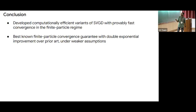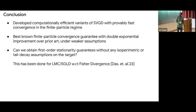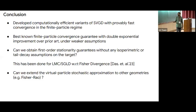To conclude: we developed a computationally efficient variant of SVGD with provably fast convergence in the finite particle regime. This is the best-known finite particle convergence, with a double-exponential improvement over prior state of the art, under much weaker assumptions. Future work includes: obtaining first-order stationarity guarantees without isoperimetric or log-Sobolev assumptions; and exploring whether virtual particle stochastic approximations apply to other geometries like Fisher-Rao or other problems in Wasserstein gradient flows.